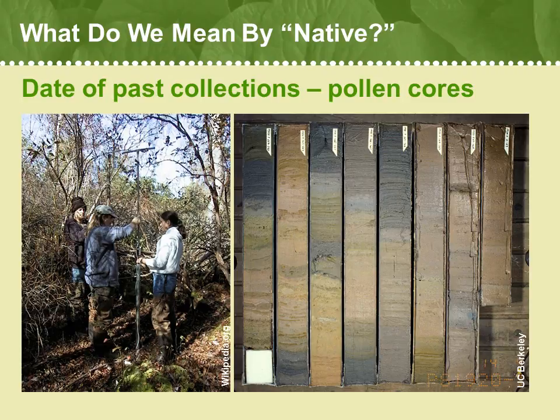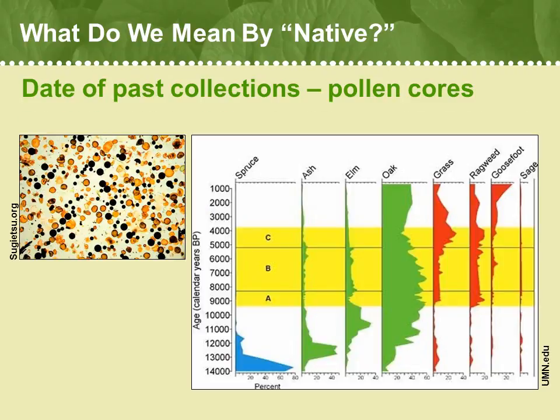The core on the right shows contrasting colors that correspond to the different environments that predominated going back thousands of years in time. We can independently determine the age of each layer through a process called carbon dating. We then extract the microscopic pollen grains that lie within each layer. The slide on the left shows a sample of pollen grains taken from a single layer in a soil core. The size, shape, texture, and color of pollen grains vary among plant species. And palynologists — those are the scientists who study pollen — can tell which pollen types correspond to which species, or at least which genus of plants that might have been growing on the landscape many years ago.